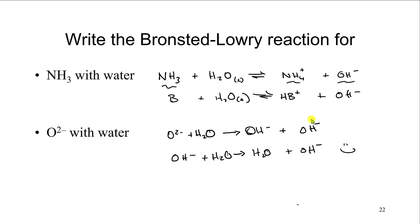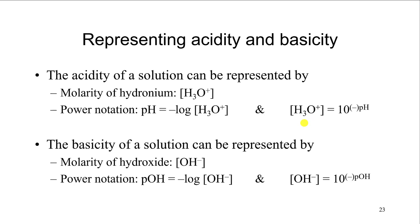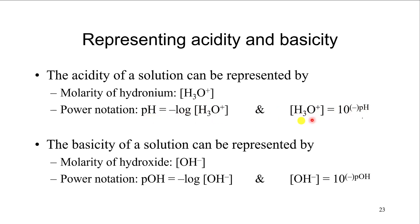Just as we represented Ka by pKa and Kb by pKb, we can do the same for hydronium and hydroxide when describing acidity and basicity of a solution. pH equals the negative log of the hydronium ion concentration. To go back, hydronium concentration equals 10 to the minus pH. For OH⁻, pOH equals the negative log of hydroxide concentration, and hydroxide concentration equals 10 to the minus pOH.